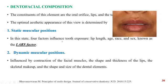The LARS factor stands for lip length, age, race, and sex. Lip length also helps in determining the position of the incisal edge. Age determines the amount of display — in an aged individual, the display of the lower teeth is more. Regarding race, studies have demonstrated that black individuals show less amount of teeth compared to Caucasians. Females demonstrate two-thirds more tooth display compared to males.